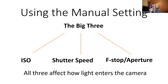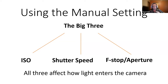The three settings you really need to know — I call them the big three — are ISO, shutter speed, and f-stop, also called aperture. F-stop is the setting that controls the camera's aperture; the terms are used interchangeably. All three do different things, but the key takeaway is that all three affect how much light enters the camera. They also do other things, which we'll get into.